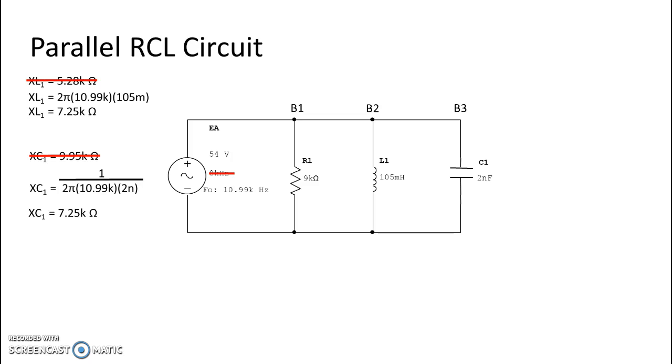Now in resonance circuits, the same holds true whether it's parallel or series. If it's at resonance and the two ohmic values are canceling each other out, then impedance is resistance and that is the same here.